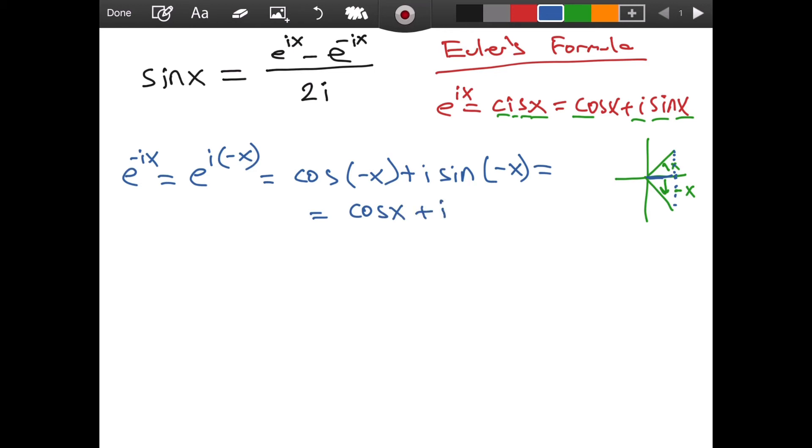Well, what about sine of negative x? If we project it over the y-axis, over the vertical axis, we see that the sign of our sine is going to change. So we will have a negative. It will be equal to negative sine of x. Well, of course, this will then mean that we have cosine of x minus i sine of x.